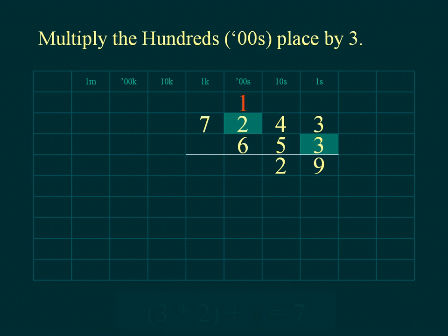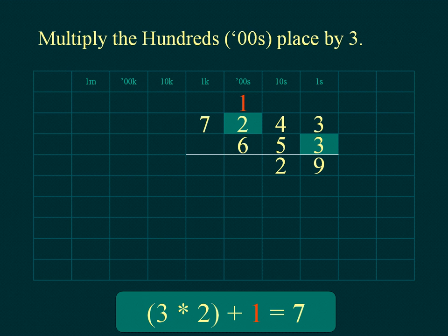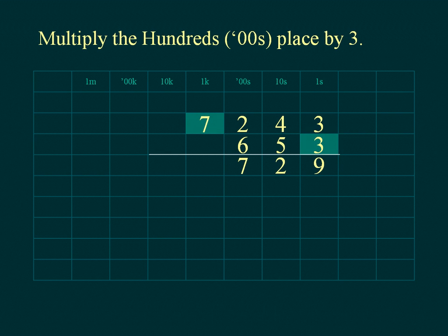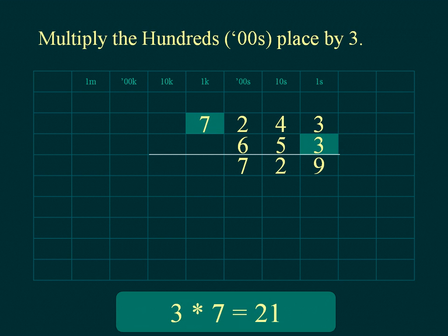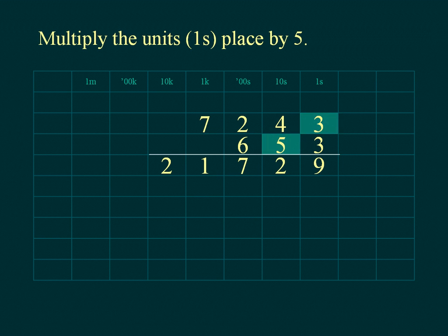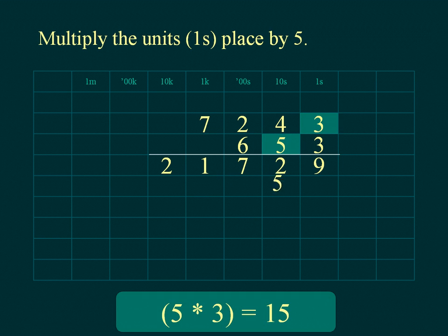Multiply the hundreds of the multiplicand. Place the tens of the result under the tens place and place the result below the line in the tens place.